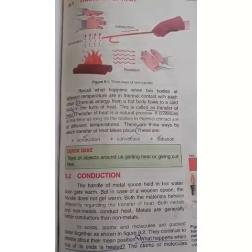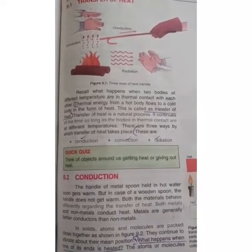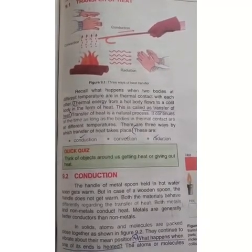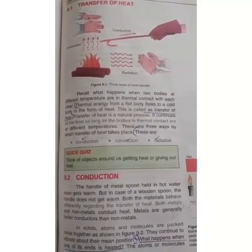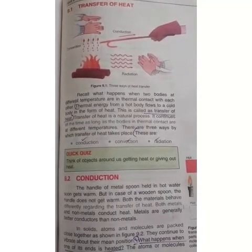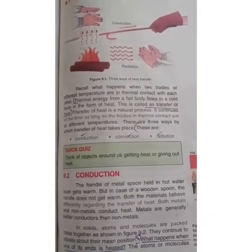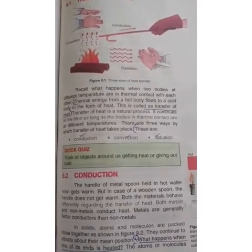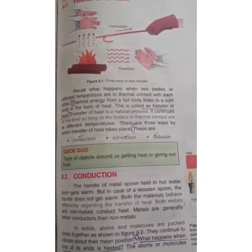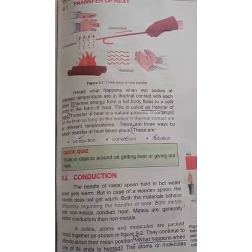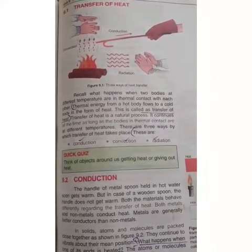Conduction occurs in metals and solid substances — heat transfer in solids happens by conduction. In liquid substances and gases, heat transfer occurs through convection. A simple example of radiation is the sun's rays, which transfer heat to Earth through radiation.